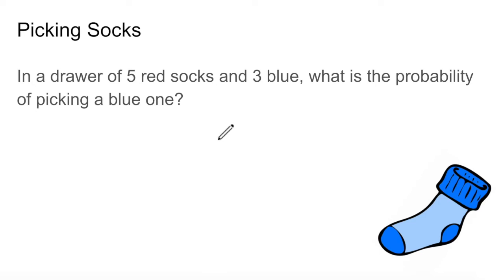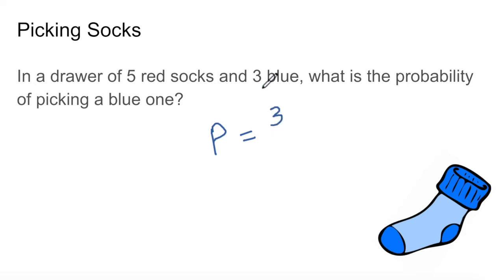Here's a sock picking problem. Coin flipping, dice, marbles, and socks are the typical problems you see in probabilities. In a drawer of five red socks and three blue socks, what's the probability of picking a blue one? There are three blue socks, so the number of winning outcomes is three — there are three different choices that would give us a blue sock. Three winning outcomes divided by the total possible outcomes: there are a total of eight socks in the drawer, so five plus three is eight. The probability of picking a blue sock is three-eighths.